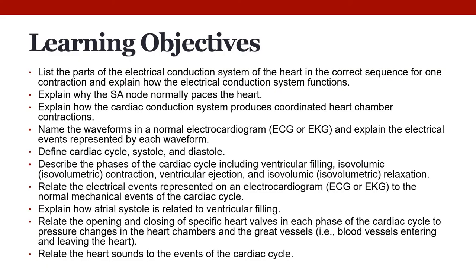We have a lot of learning objectives to cover today: the electrical conduction system, the cardiac conduction system producing coordinated heart chamber contractions, the waveforms, and the normal EKG. The parts of the cardiac cycle — systole and diastole — the phases of the cardiac cycle including ventricular filling and ventricular ejection. Relating the EKG to the cardiac cycle, the opening and closing of heart valves, pressure changes in the heart chambers and great vessels, and the heart sounds relating them to the cardiac cycle.